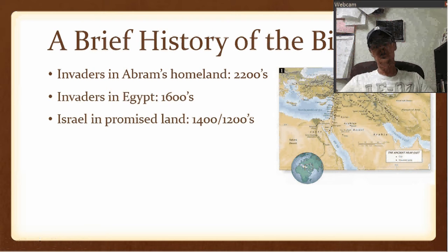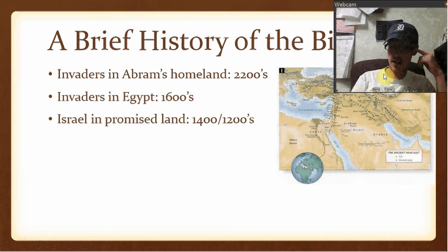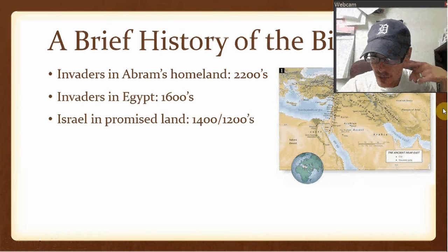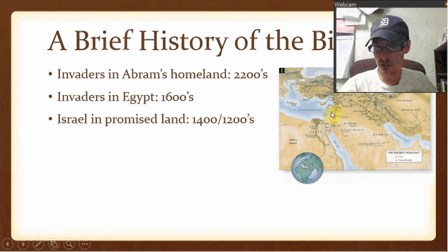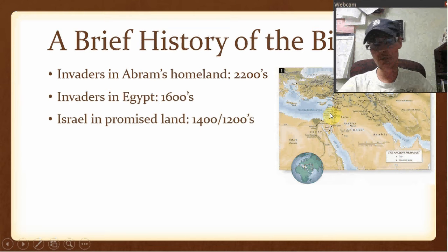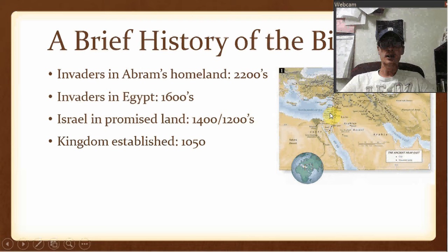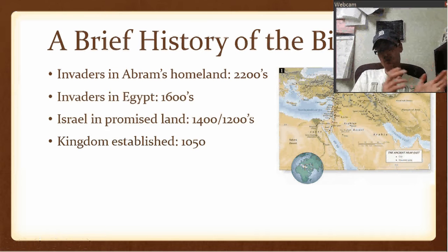Instead of taking a direct route, they go way down and around, spending 40 years in the desert because they didn't trust God. Then Moses dies, Joshua takes over and leads them into the Promised Land — bringing us to the book of Joshua. Israel is back in the area Abraham had been in, completing a kind of full circle, somewhere around 1400 to 1200 BC.